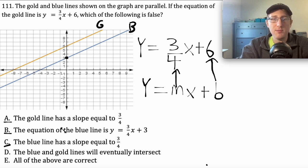So a, b, and c are correct. What about d? Is d true or false? The blue and gold lines will eventually intersect. Well, that's a key point to note about parallel lines. For parallel lines, we know that they will never intersect. So d is incorrect, and since d is a false statement, we know that that's the correct answer here because we're looking for which of the following is false.